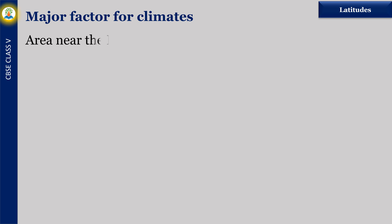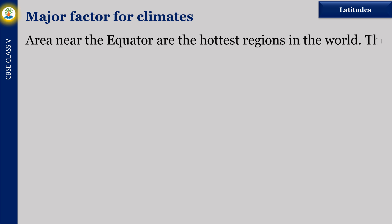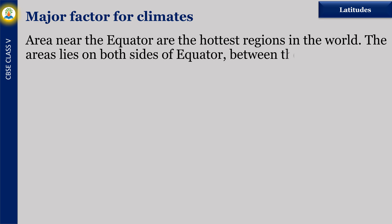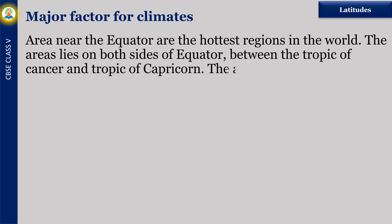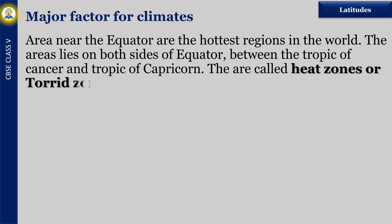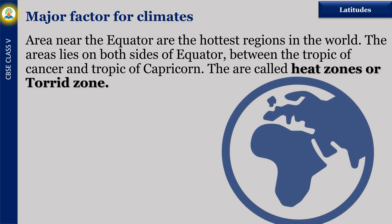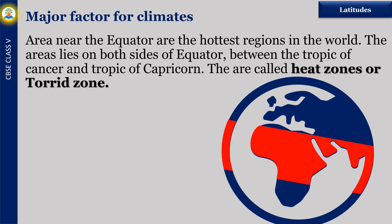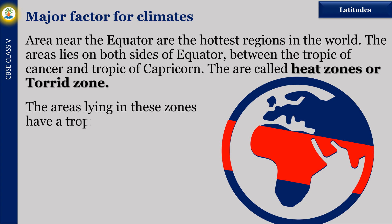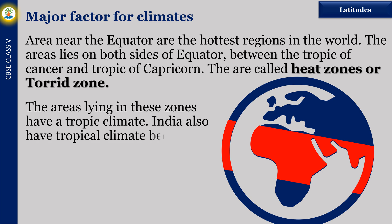Areas near the equator are the hottest regions in the world. The area lies on both sides of the equator, between the Tropic of Cancer and Tropic of Capricorn. They are called the Hot Zone or Torrid Zone. The areas lying in these zones have a tropical climate. India also has a tropical climate because it lies in the Torrid Zone.